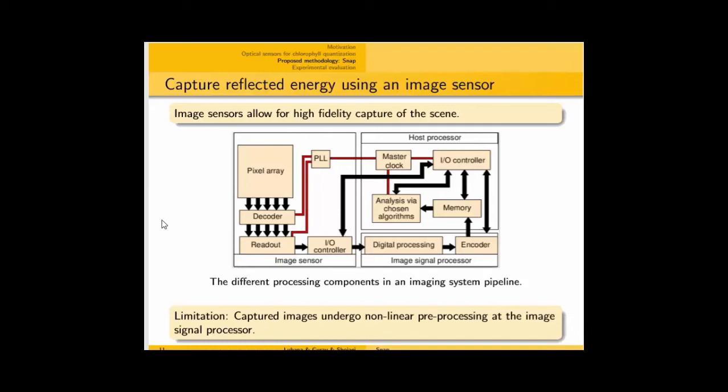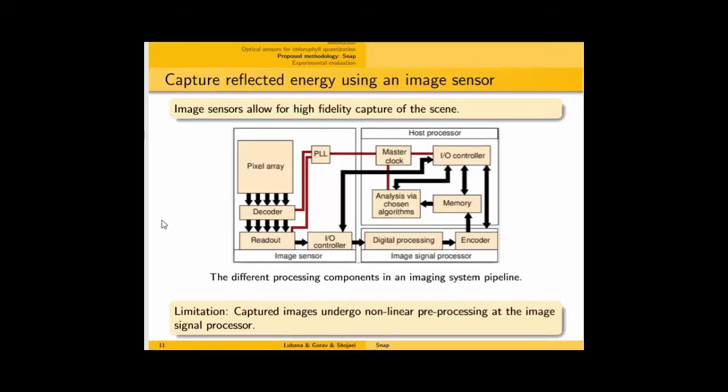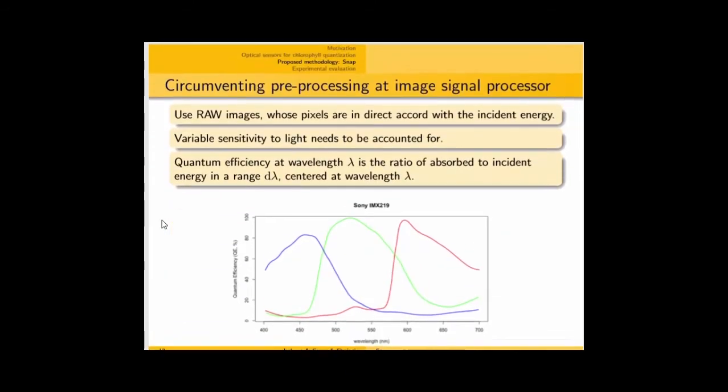However, a major limitation is the fact that the image signal processor performed non-linear preprocessing. So in order to circumvent that, we use raw images of leaves, which are directly outputted across the image sensor and still haven't yet been processed by the image signal processor.